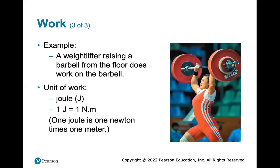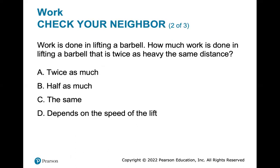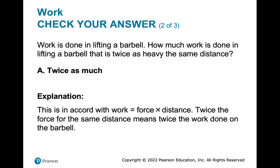A weightlifter raising a barbell from the floor does work on the barbell. The unit of work is the joule: one joule equals one newton meter. How much work is done in lifting a barbell that is twice as heavy the same distance? It's twice as much. The gravitational force is twice as great, the distance is the same, so it's twice the work. This accords with work equals force times distance — twice the force for the same distance means twice the work done on the barbell.